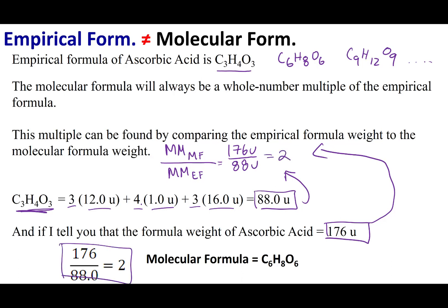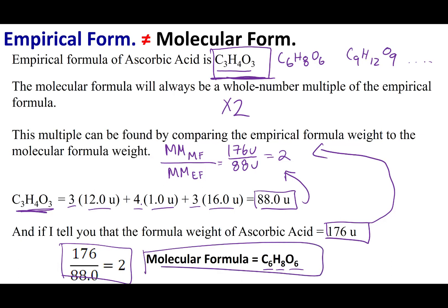We get two. That means the molecular formula is twice as heavy as the empirical formula — there are two empirical formulas inside the molecular formula. So I take the empirical formula and multiply every subscript by two: C₃ becomes C₆, H₄ becomes H₈, and O₃ becomes O₆. So the molecular formula for ascorbic acid is C₆H₈O₆.